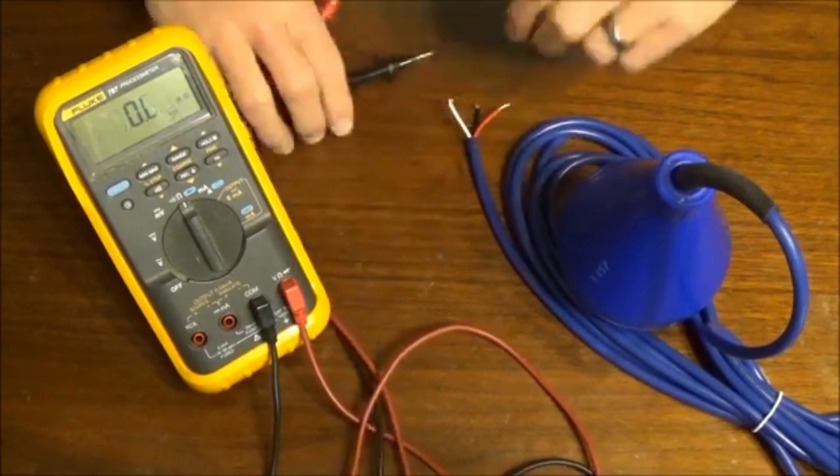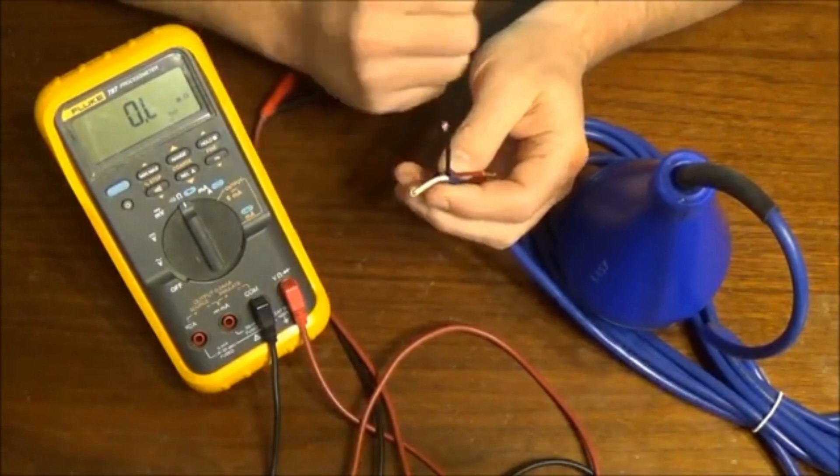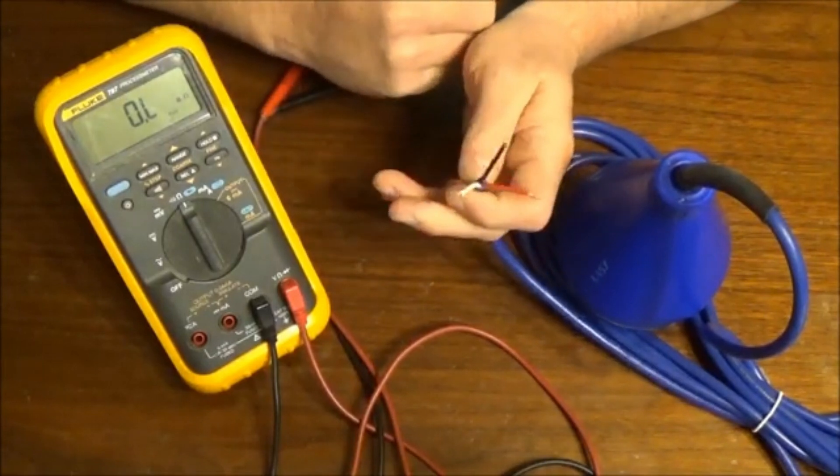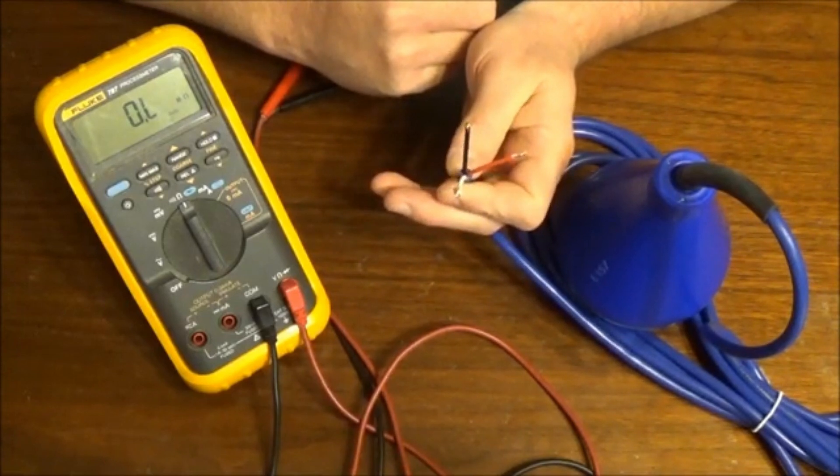If we look at the float switch conductors, there's three on this particular float, indicating that it has a common and normally open and normally closed conductor.